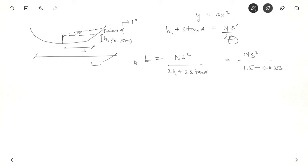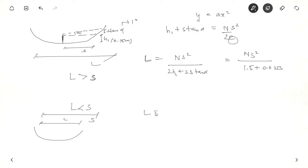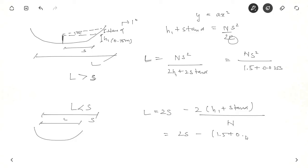This formula applies when L is greater than the sight distance S. If L is less than the sight distance, then: L = 2S − (2H1 + 2S·tan(alpha)) / N. Substituting alpha and H1 gives: L = 2S − (1.5 + 0.035S) / N.